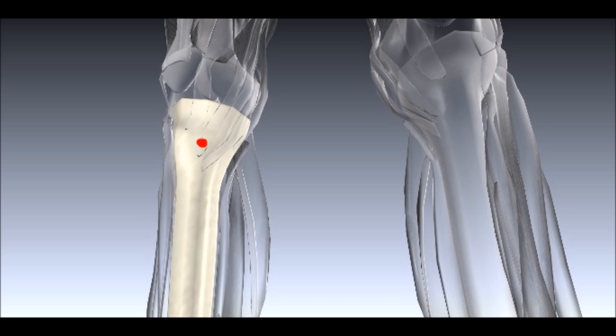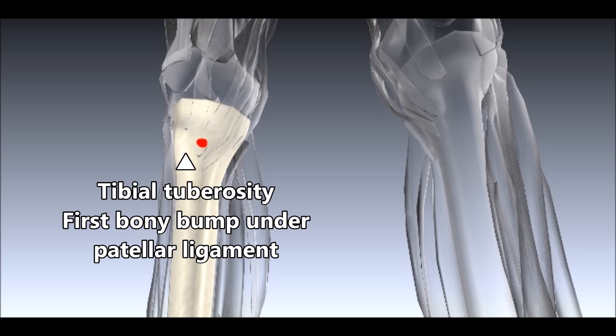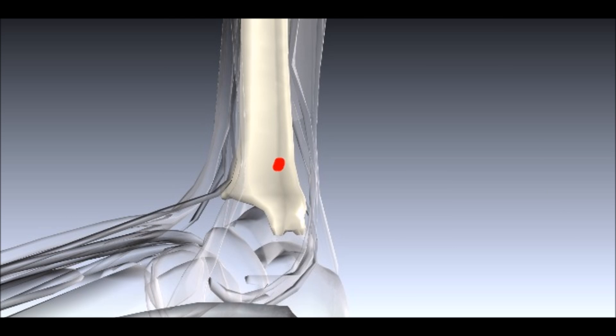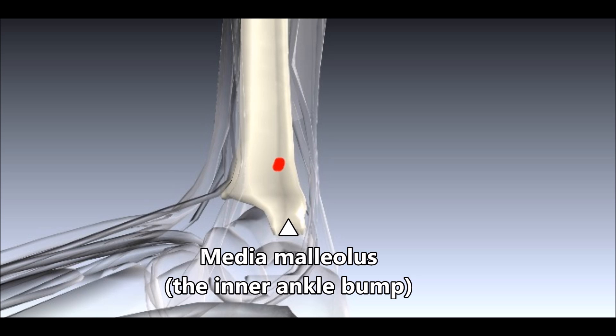The two easy sites are the proximal and distal tibia. For the proximal tibia, locate the tibial tuberosity and move a couple of centimetres medially. Your insertion site is just above this point in adults, or a little bit below it in children. For the distal tibia, locate the medial malleolus — the inner ankle — and move up a couple of centimetres up the leg.